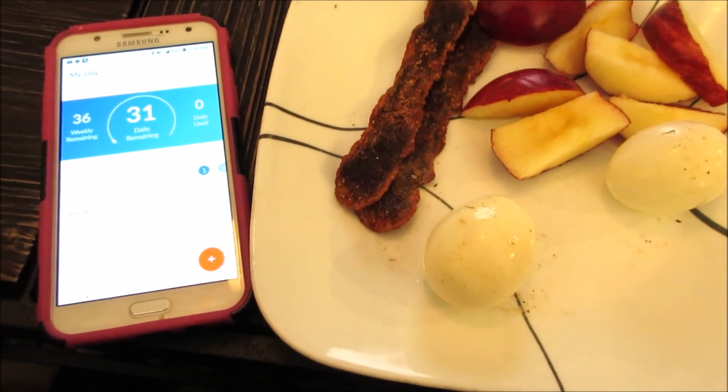So that gives me 31 daily points. That's what I get every single day and for weekly points in this case I've used some weekly points. I've rolled over some and I've used some. I start out the week with 46 weekly points and 31 daily points. At this point I have 36 weekly points left.